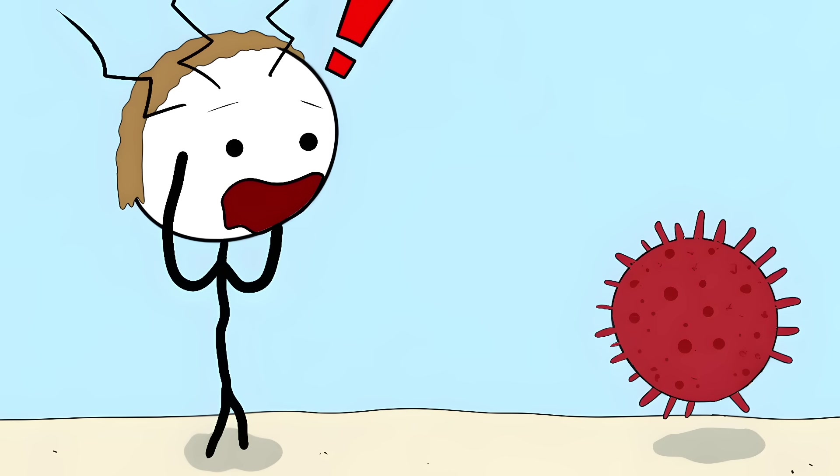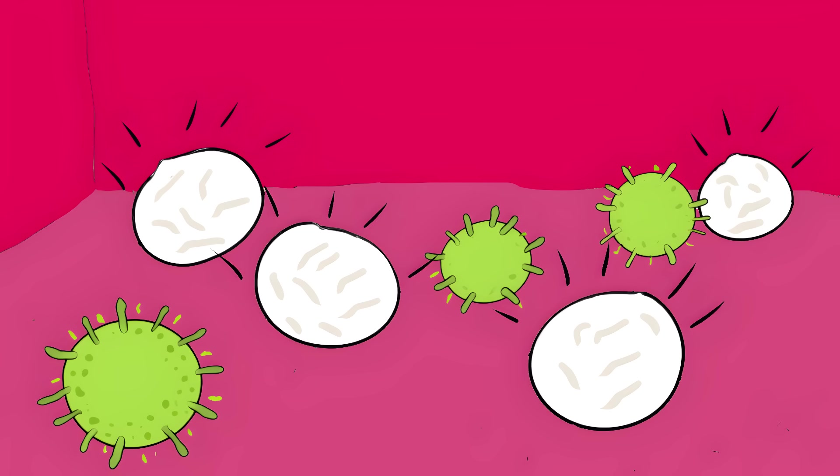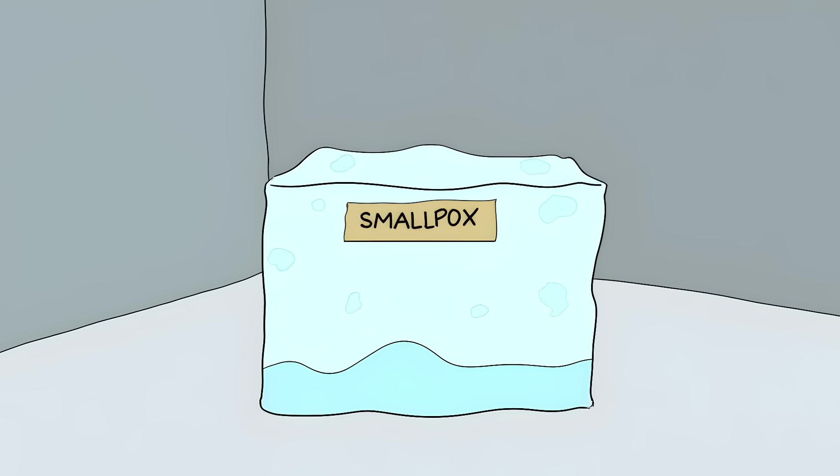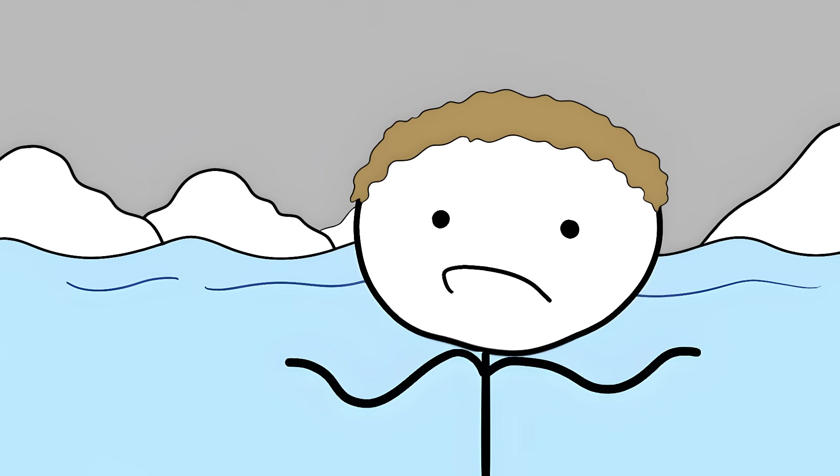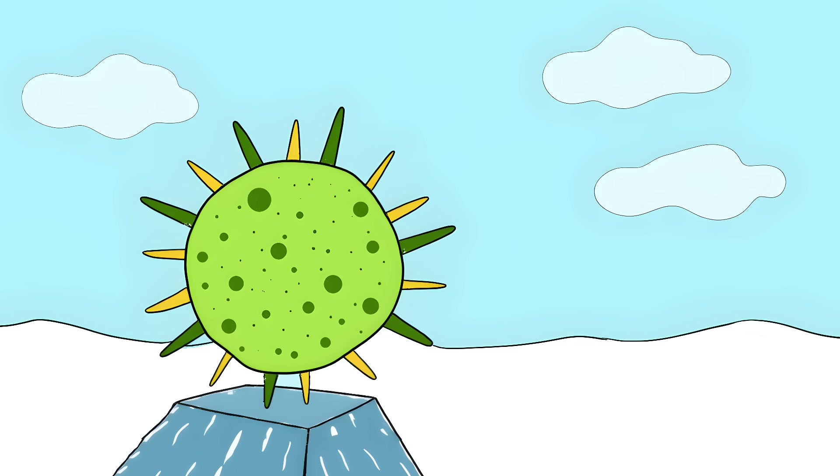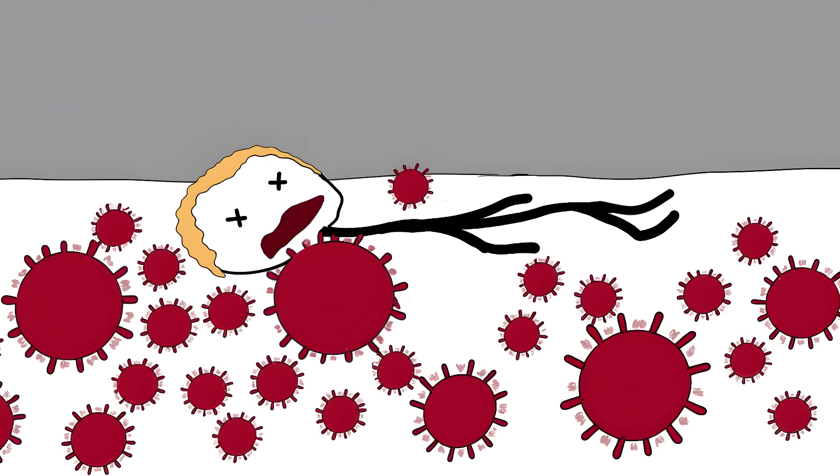We have no immunity to these ancient viruses. Our bodies have never seen anything like them before. Scientists have already found traces of smallpox and other deadly viruses in the ice. All it takes is one prehistoric virus to start spreading. The ice is melting and we can't stop it. These viruses are going to wake up whether we're ready or not. And when they do, we might be facing something our immune systems have no defense against.